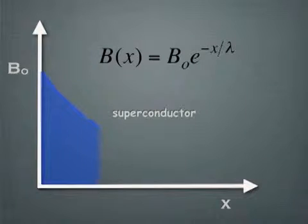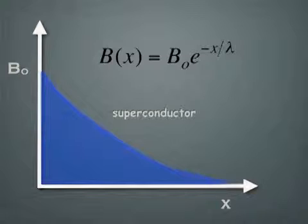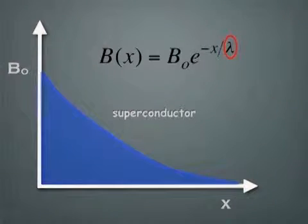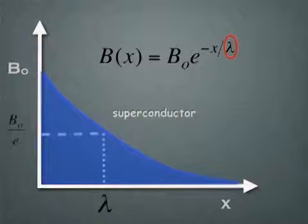What happens in the superconductor is that B-naught falls to a value of zero well within the body of the superconductor. Lambda is seen to be the characteristic length associated with this decay. Lambda is in fact the distance within the superconductor at which the field falls to B-naught over e of its surface value.